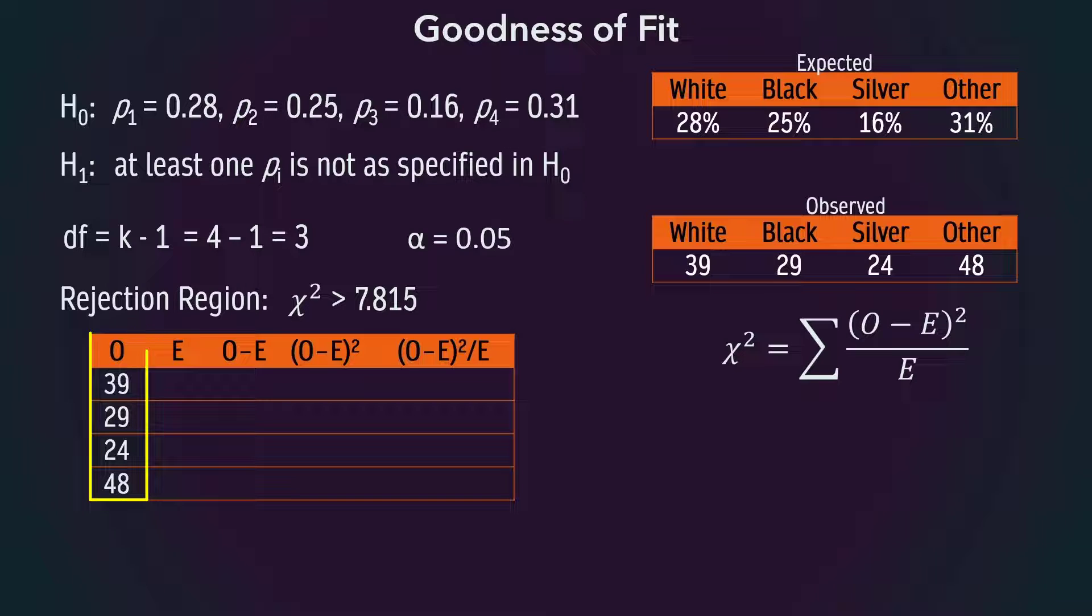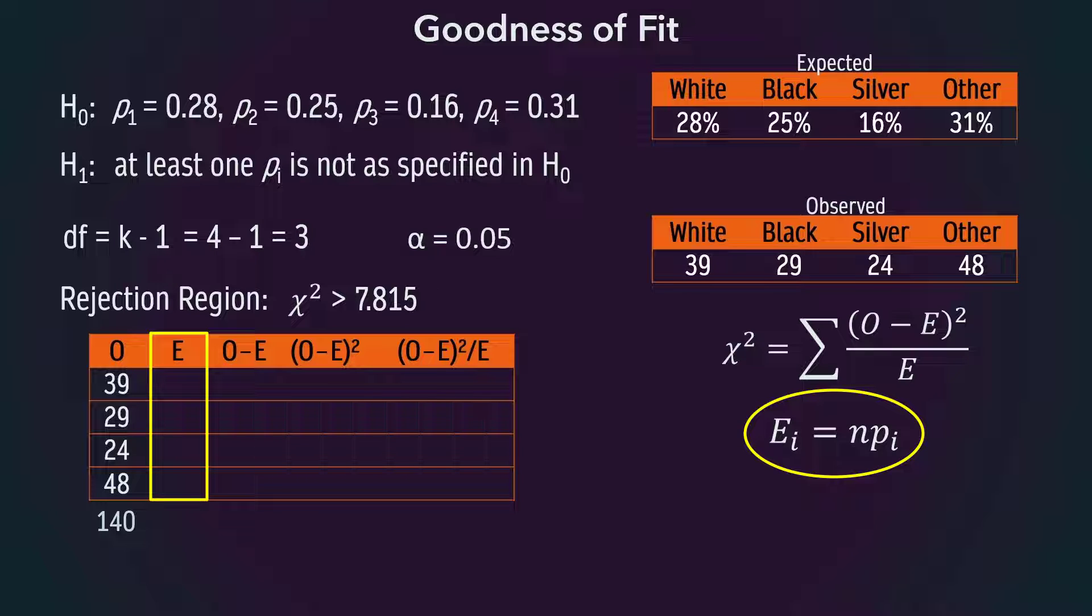Here are the observed frequencies, which add up to 140. The expected frequencies for the goodness-of-fit test are calculated by n times pi, where n is the total of the observed frequencies, that is 140 in this case, and the pi's are the expected proportions that we have in the null hypothesis here.